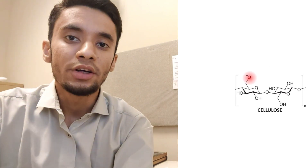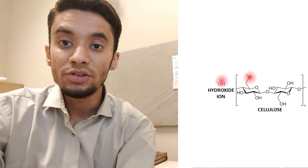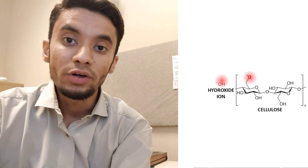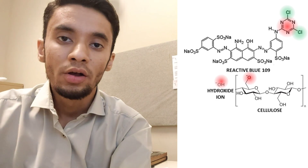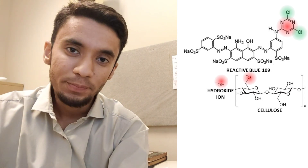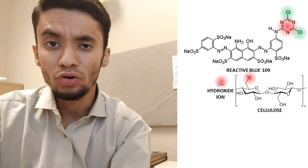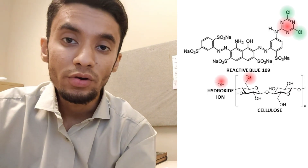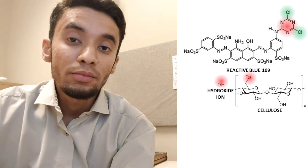Unfortunately, there is another nucleophile present in the dyeing liquor, which is the hydroxide ion. This means that there are two reactions that are going to take place. Number one is the fixation reaction, which is the reaction between cellulose and the dye molecule, due to which they form covalent bonds and get fixed. Secondly, the hydroxide ion present in the water will react with the dye molecule and consume its reactive group, after which the dye molecule will lose its property to react with the substrate.